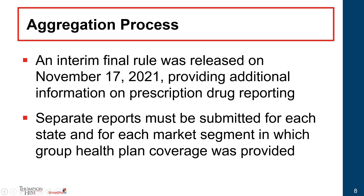There are seven total market segments, including the individual market, a separate student market, the fully insured small group market (defined as 100 or fewer employees), the fully insured large group market, self-insured small group, self-insured large group, and the Federal Employees Health Benefits Program. A group health plan will typically fall into one category, but it's possible a plan could fall into both — for example, having self-insured coverage somewhere and fully insured coverage elsewhere. In that case, you'd have at least two different sets of all the required information.